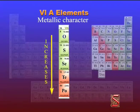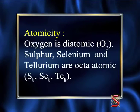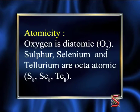The next property is metallic character. Oxygen and sulfur are strongly non-metallic while selenium and tellurium are weakly non-metallic. Tellurium is a semi-metal, that is metalloid. Polonium is a metal. The metallic character increases from oxygen to polonium.